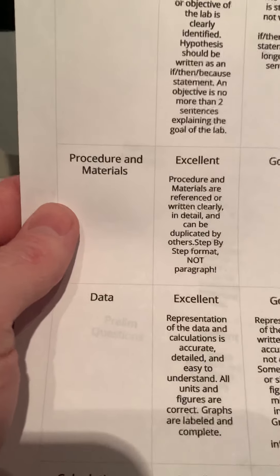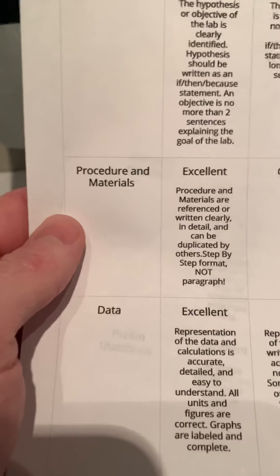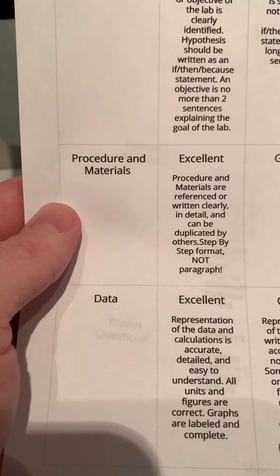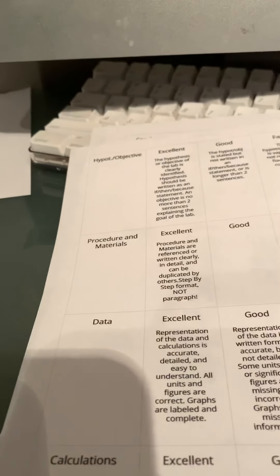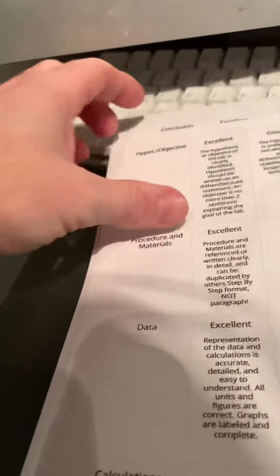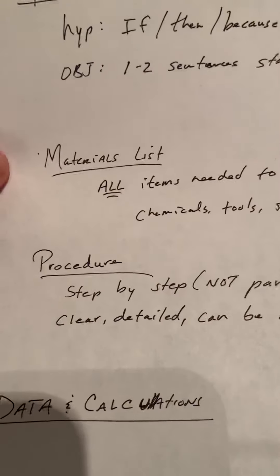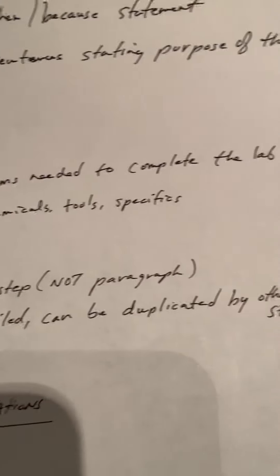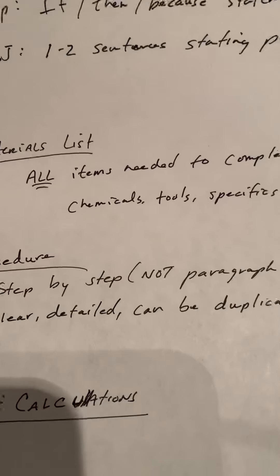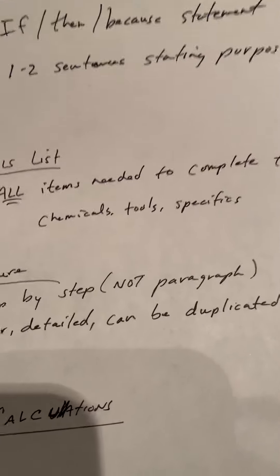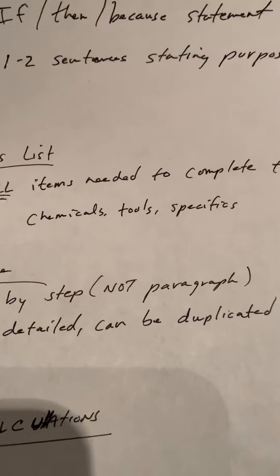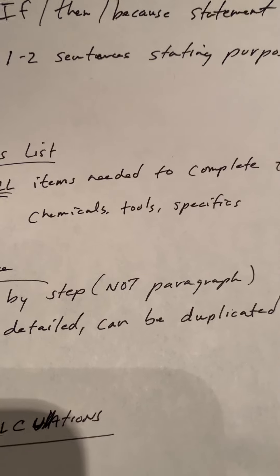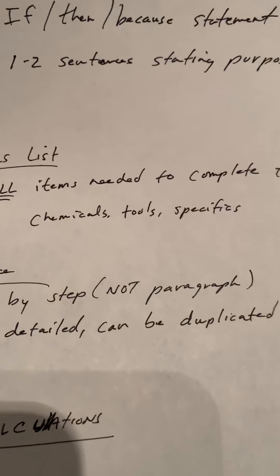That moves us into the procedure and materials section. The materials are everything that you need in order to completely do the lab. So, all items needed to complete the lab — that means chemicals, tools — and give me specifics. Don't just say graduated cylinder; they come in different sizes. You'll need to specify: is it a 100 milliliter graduated cylinder or is it a 50 milliliter graduated cylinder?